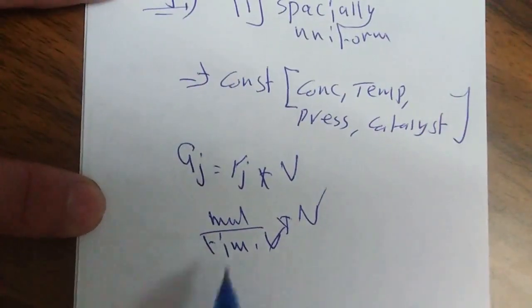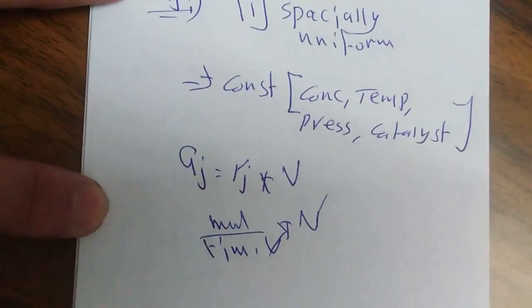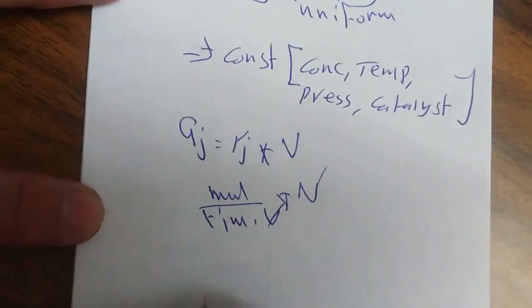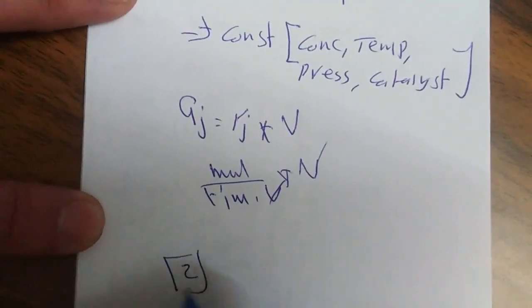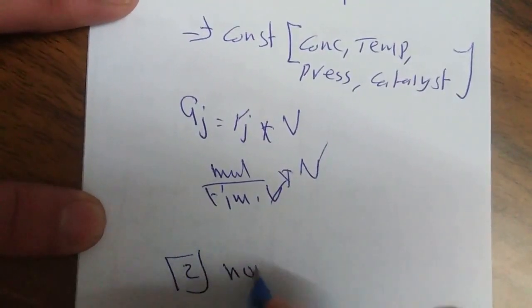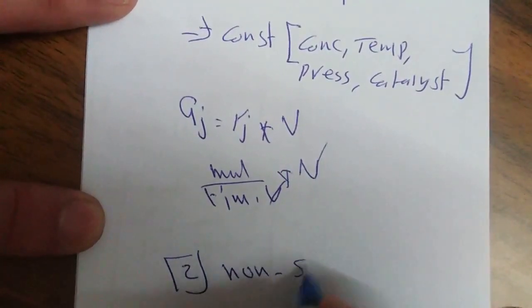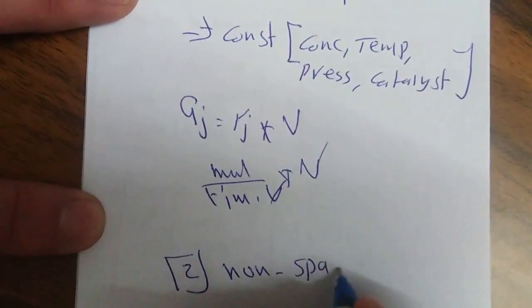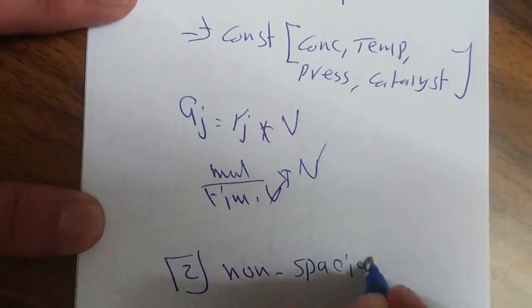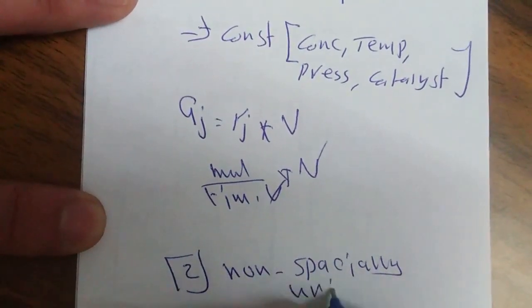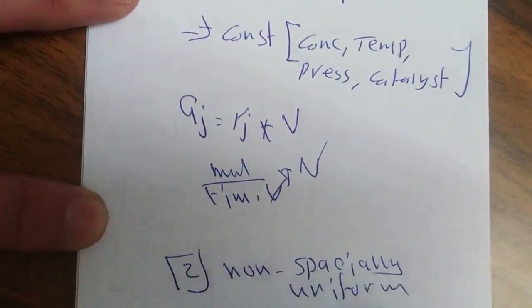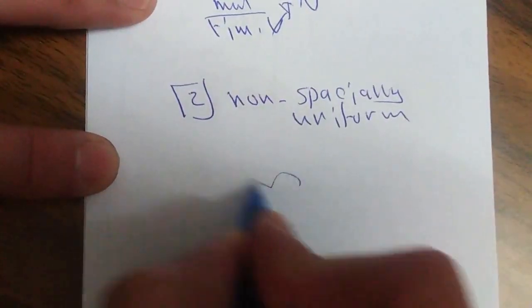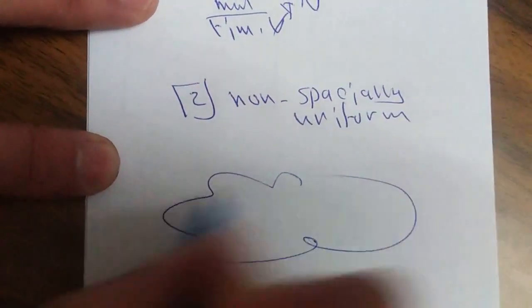فبطلع عندي وحدة generation هي mol per time. الحالة الثانية أنه بيكون في عندي non-spatially uniform، يعني أن rate of reaction is not constant. فلو أخدت system volume اللي عندي، بلاحظ أن r مع delta V رح يختلف عن r delta V الثاني.